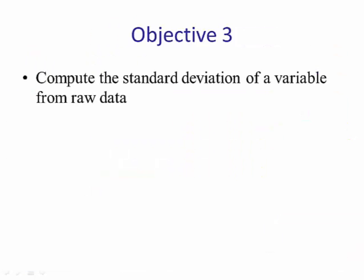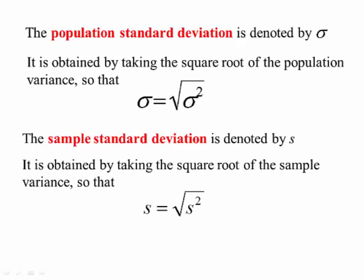Lesson objective number three: Compute the standard deviation. The population standard deviation is denoted by sigma and it's obtained by taking the square root of the population variance. So sigma is equal to the square root of the variance sigma squared. The sample standard deviation is denoted by s and it's obtained by taking the square root of the sample variance, so that s equals the square root of the sample variance which is s squared.